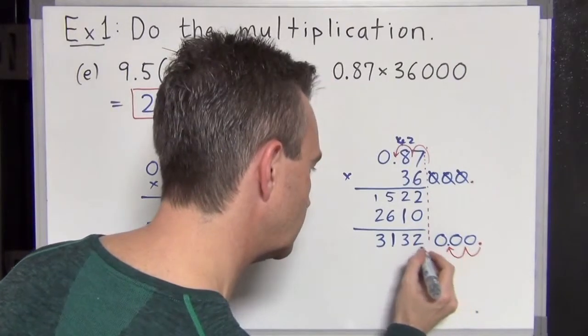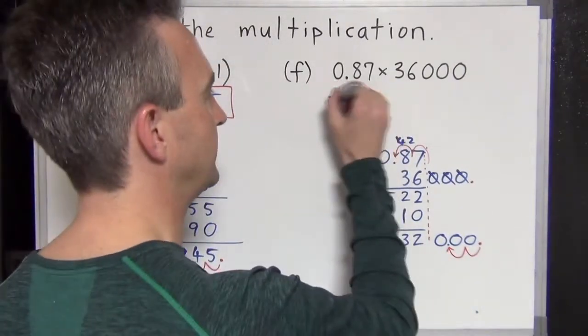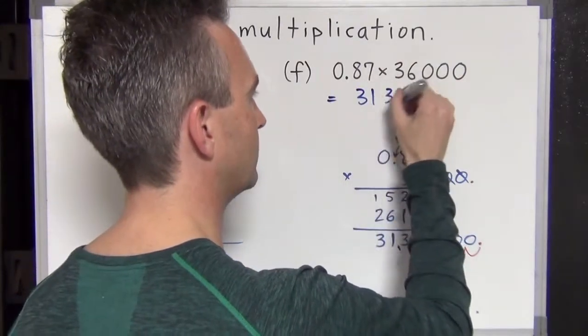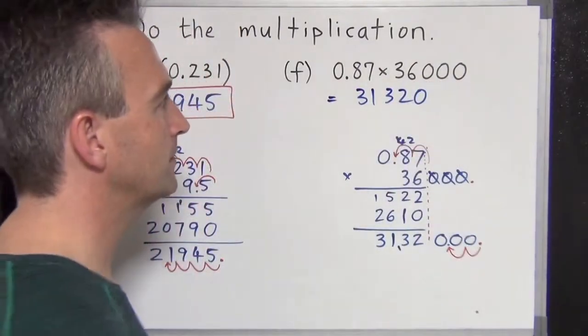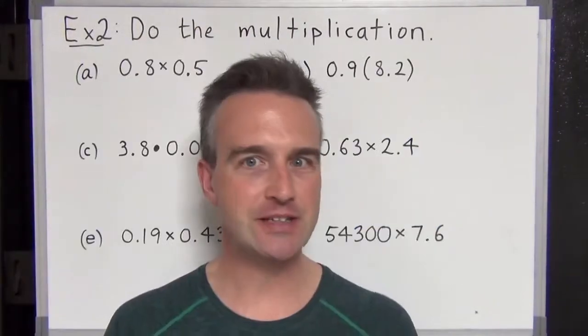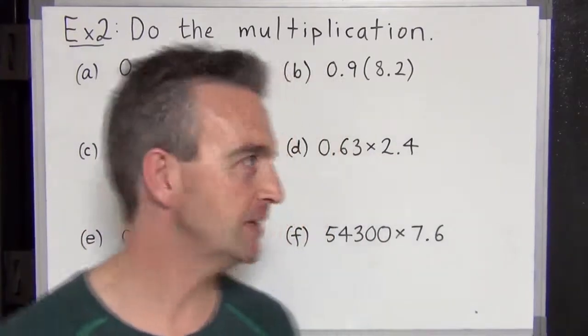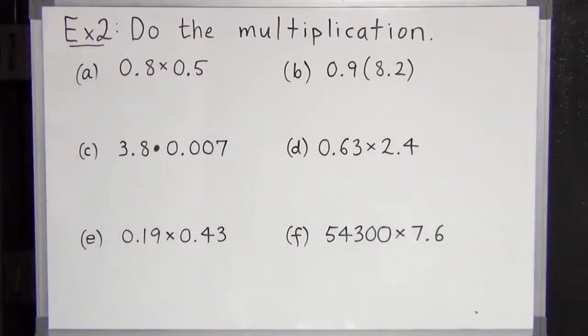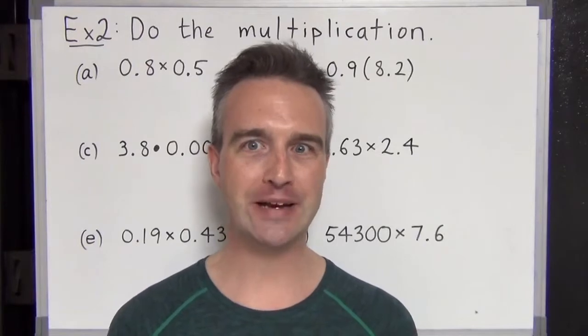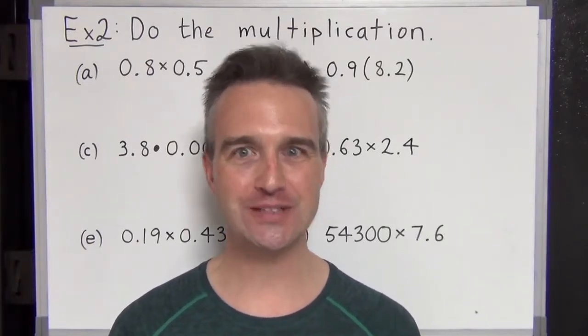So our final answer, one, two, three, whack a comma there. 31,320. And that is about as tricky as decimal multiplication can be. It's now your turn. Please try example two. Can you multiply these pairs of decimal numbers? Remember, do it on paper now. No calculators. Put your answers up in the comments section. And as always, thanks for watching.